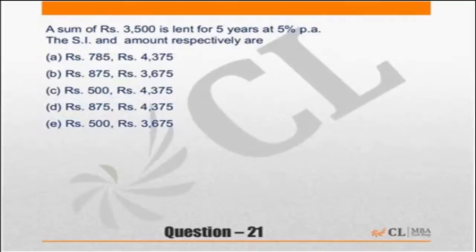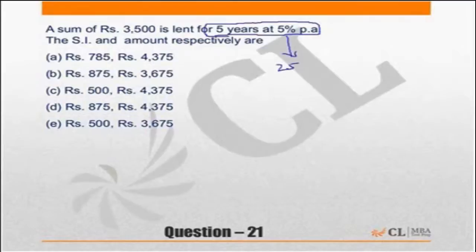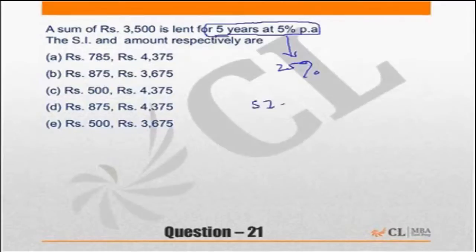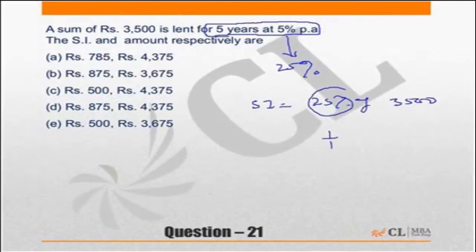3500 is lent for 5 years at 5% simple interest. 5 years at 5% is nothing but 25%. That means every year you are getting 5%, so simple interest for 5 years will be 25% of the principal. So the simple interest will be equal to 25% of 3500. 25% is nothing but one-fourth of 3500.